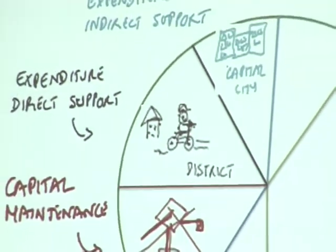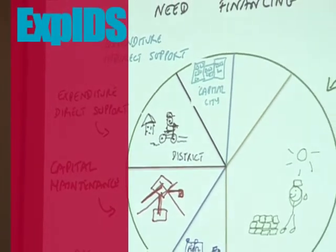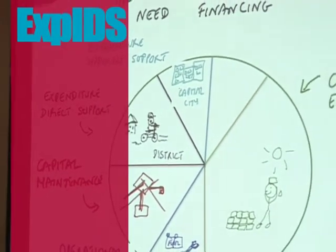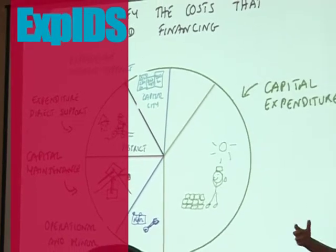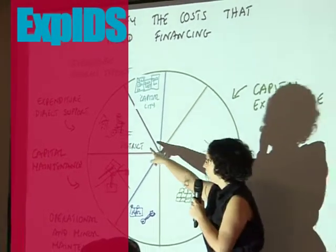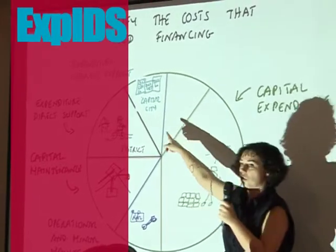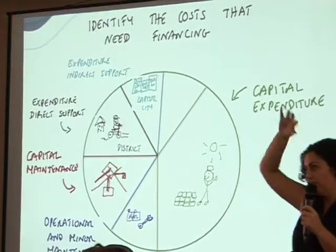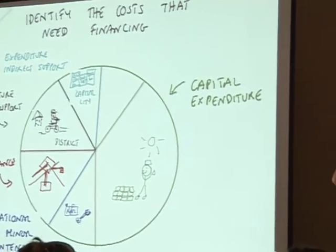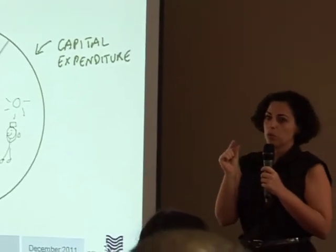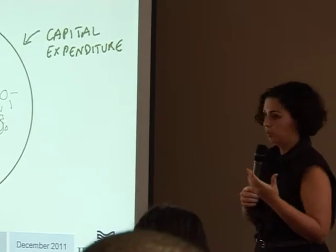Then we have what we call indirect support — it's the cost at the capital city, ministry level. Very interestingly, in some countries which are supposed to be decentralized with more expenditure at local level, when you go and collect expenditure data, it's all happening at the capital level — retaining all these funds. This needs to be costed; it's usually a very small percentage, but it needs to be accounted for.